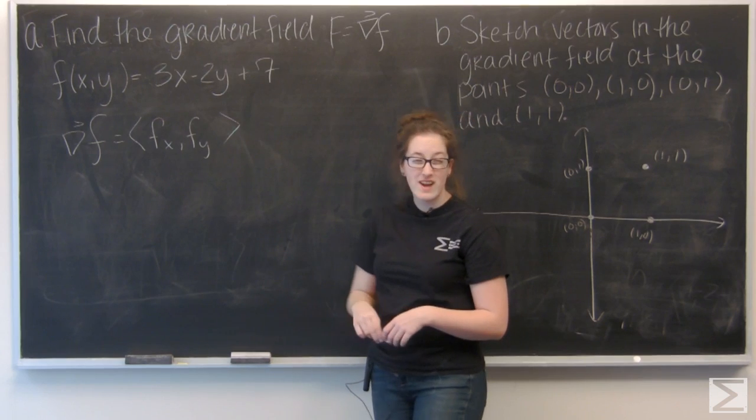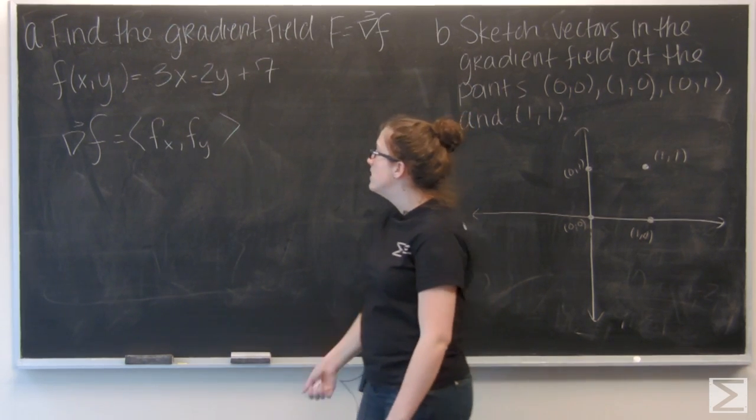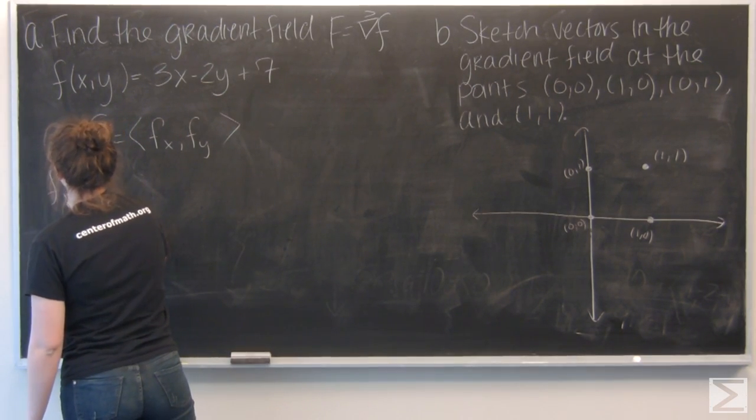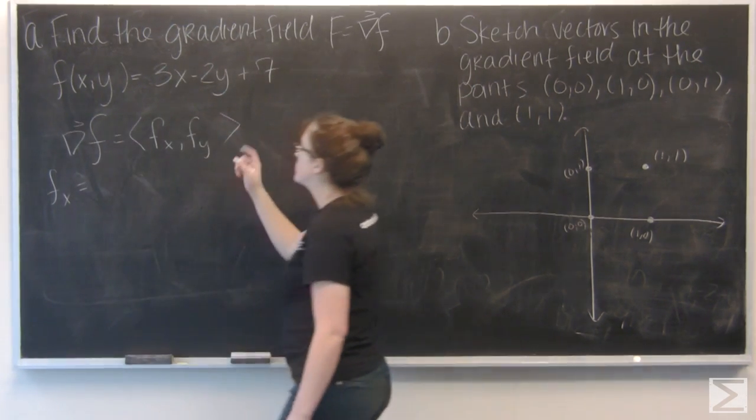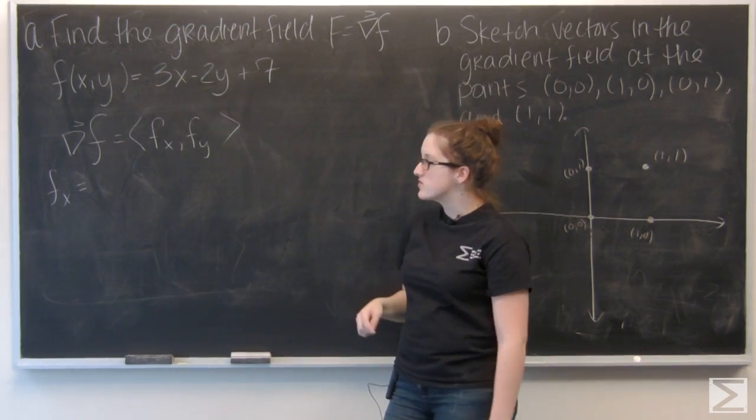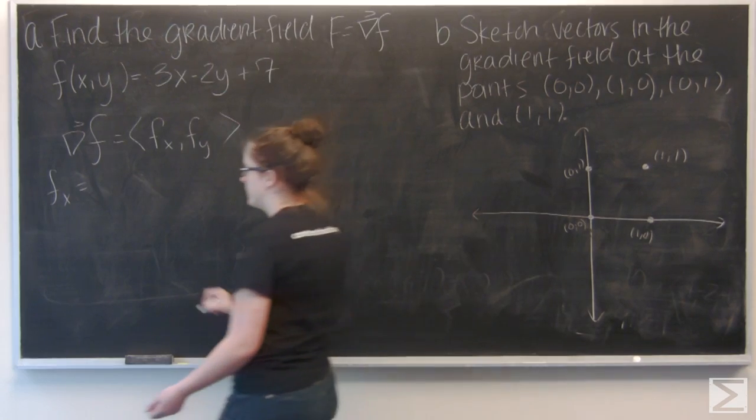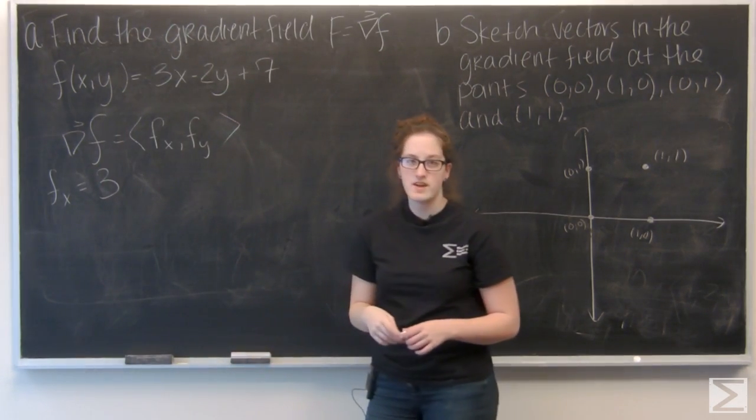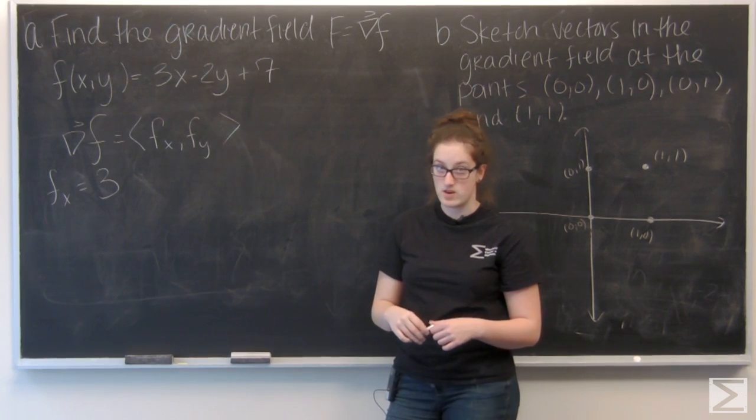Let's find those two partial derivatives. Let's do x first. If I differentiate this with respect to x, the first term 3x becomes 3, and then negative 2y plus 7 are both treated like constants and end up being 0.